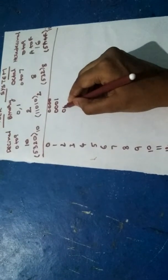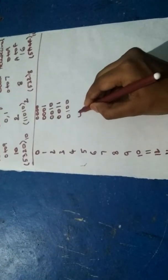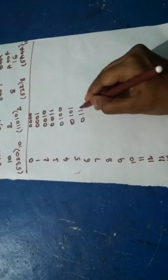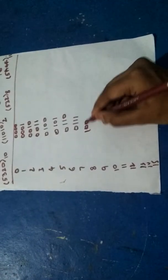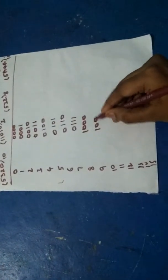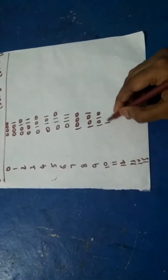3 means 0011, 4 means 0100, 5 means 0101, 6 means 0110, 7 means 0111, 8 means 1000, 9 means 1001, 10 means 1010, 11 means 1011.